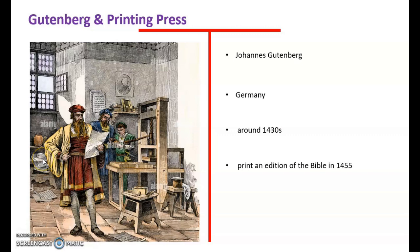These are the important points about Johannes Gutenberg: he was German, he introduced the movable printing press around the 1430s, and he printed an edition of the Gutenberg Bible in 1450.